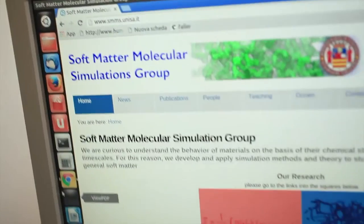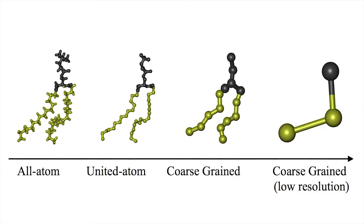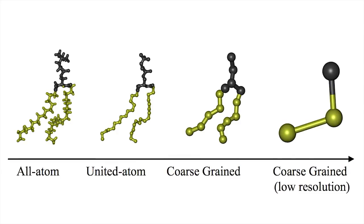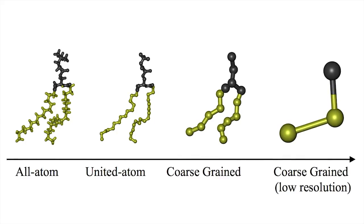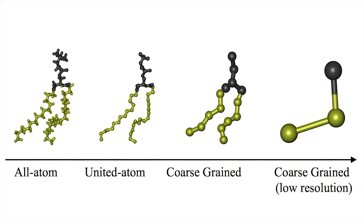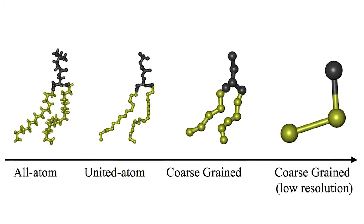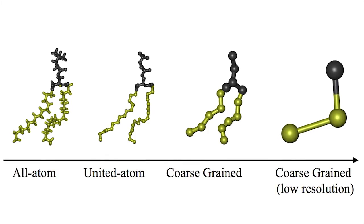How can we address this problem? The approach named coarse-graining is nowadays popular in the field of molecular simulations. By coarsening, simulators perform an educated simplification of the models, aimed at retaining useful information and disregarding less useful details. This is similar to zooming out with a microscope. You may lose some resolution, but you gain a global view.